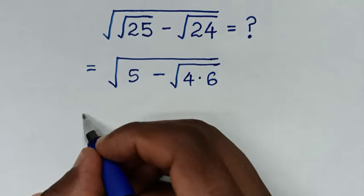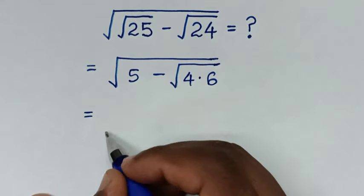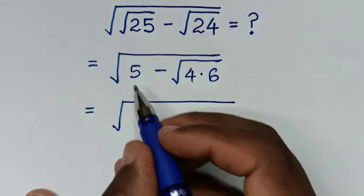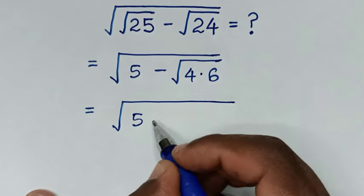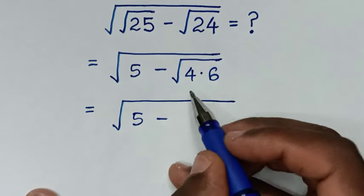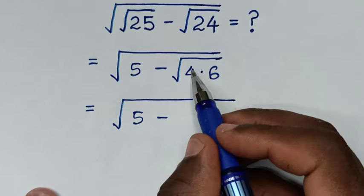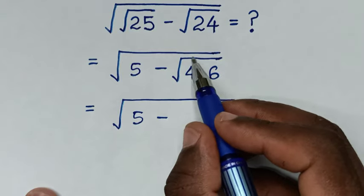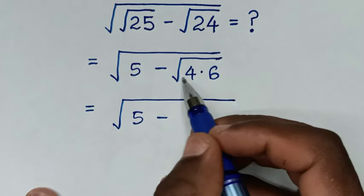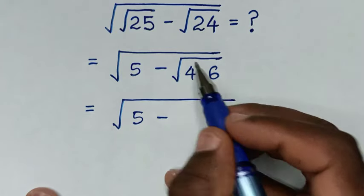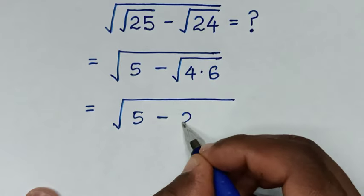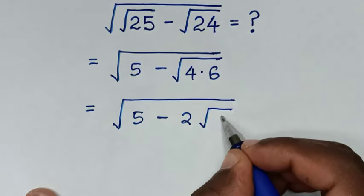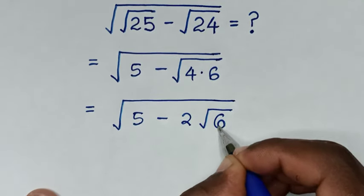Then, in the next step, it will be equal to square root of 5, then minus — from here we can split square root of 4 times square root of 6. Now, square root of 4 is 2, then times square root of 6.